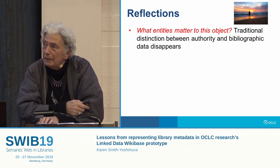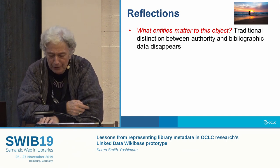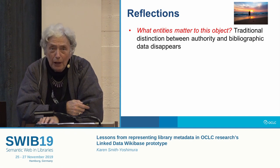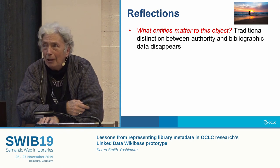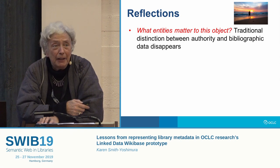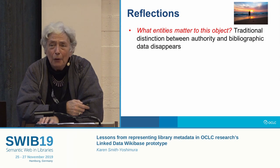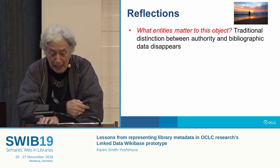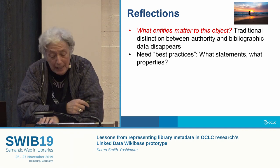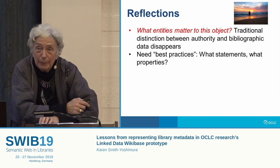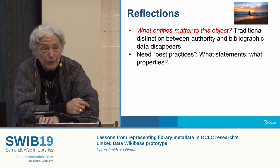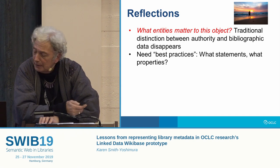With the embedded multi-script support, people could add structured data in their own writing systems, thus minimizing the need to add transliterations as in current library practice. The ability to change one's language interface replaces the language of cataloging we use now. Reflecting on some of these lessons, one of the most important is the emphasis on what entities matter to this object, rather than how do I describe the item in hand. It also shows that the traditional distinction between authority and bibliographic data basically disappears — whatever is in an authority record or a bibliographic record can become just an entity. It was obvious that we always needed best practices; participants were always asking for guidance about what statements and properties were needed. The more diverse the community we serve, the more best practices will be needed.